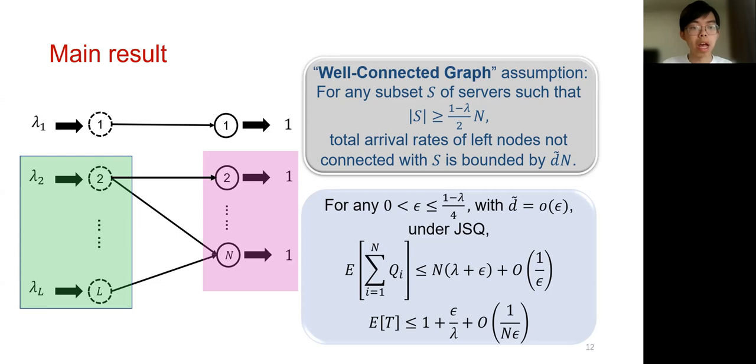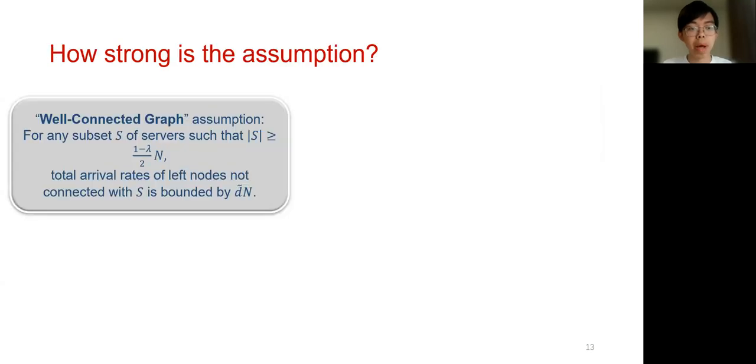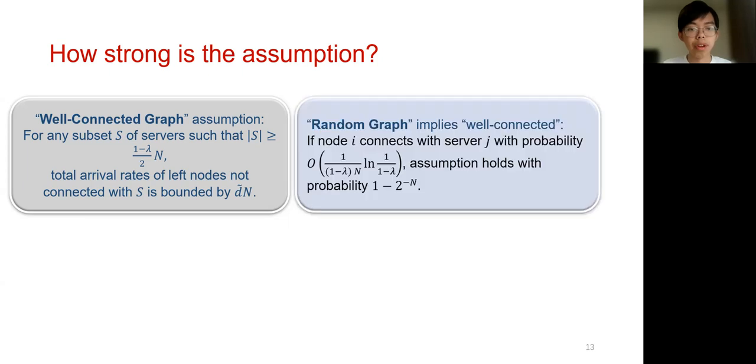Then by Little's law, the mean response time of this system is given by the total queue length over n times lambda. Therefore, the mean response time is upper bounded by 1 plus epsilon over lambda plus big O of 1 over n times lambda. We can take epsilon to be little o of 1, and thus as n goes to infinity, the mean response time will simply converge to 1. It then implies that Join the Shortest Queue can have the property of zero waiting when the locality constraints satisfy the well-connected assumptions. But how strong is the requirement of well-connected bipartite graph? Indeed, we show that this requirement can be easily satisfied by a random bipartite graph. We show that if node i of L connects with node j with probability defined by this formula, then the assumption will hold with probability at least 1 minus 2 to the minus n.